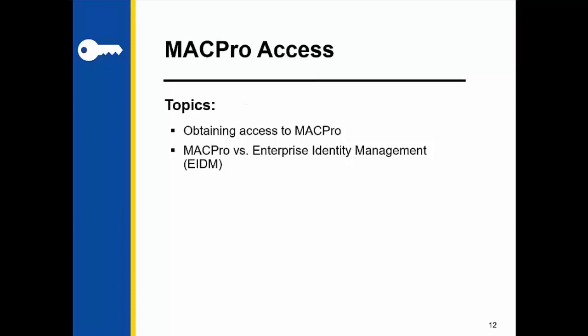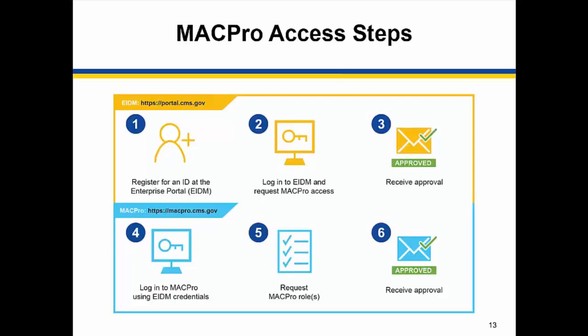Now we'll go over how to access MACPro. If you already have MACPro access, the next two sections will be a refresher. It's important to remember that there are two links. Steps one through three should be completed within EIDM via the Enterprise Portal at https://portal.cms.gov. Steps four through six should be completed within MACPro at https://macpro.cms.gov.